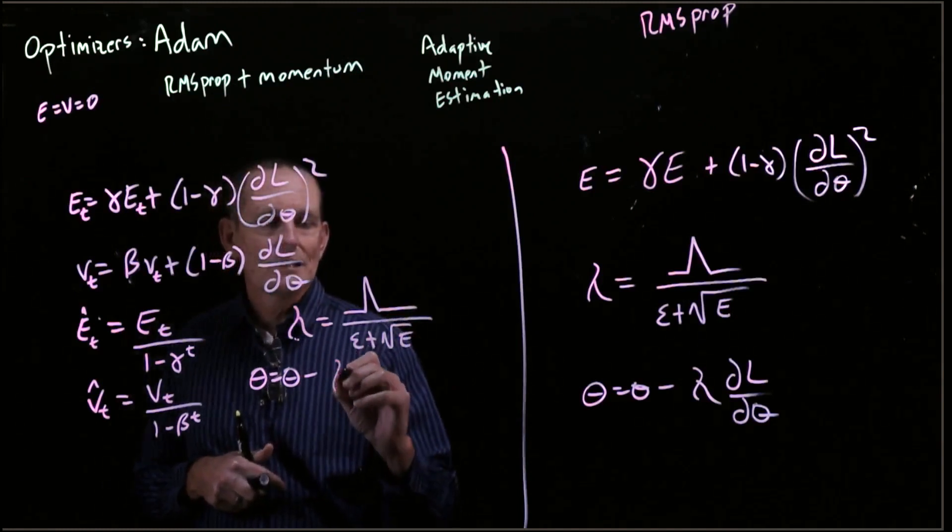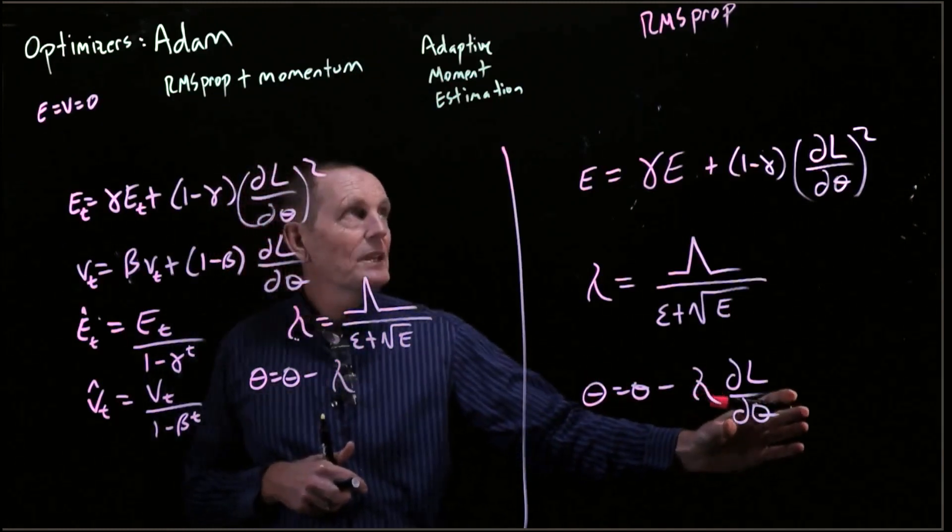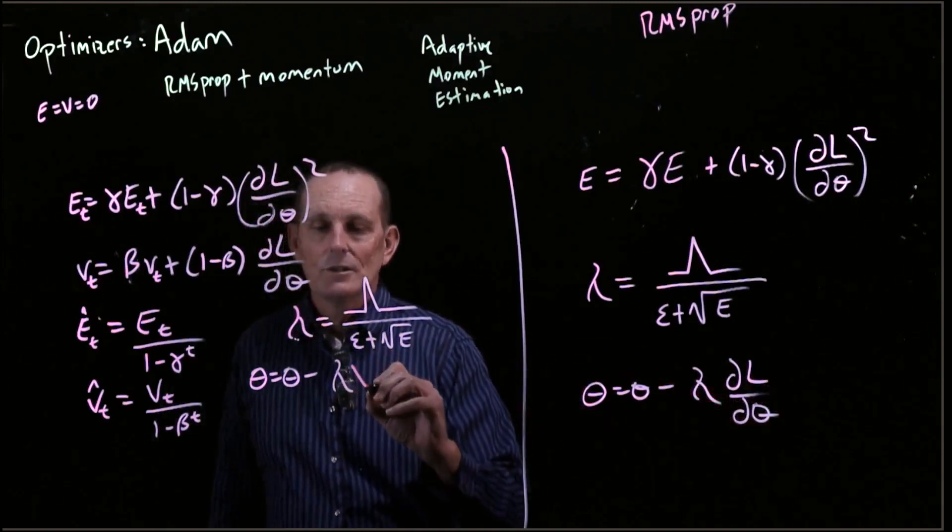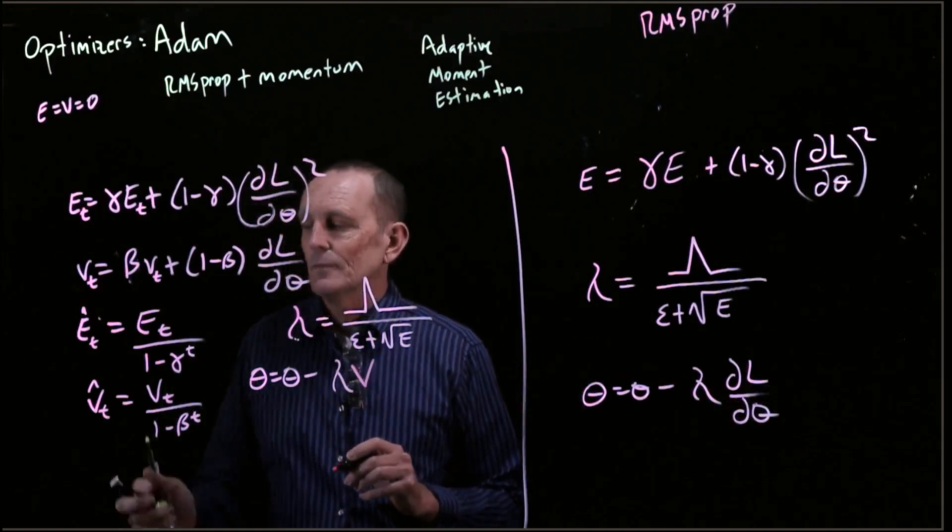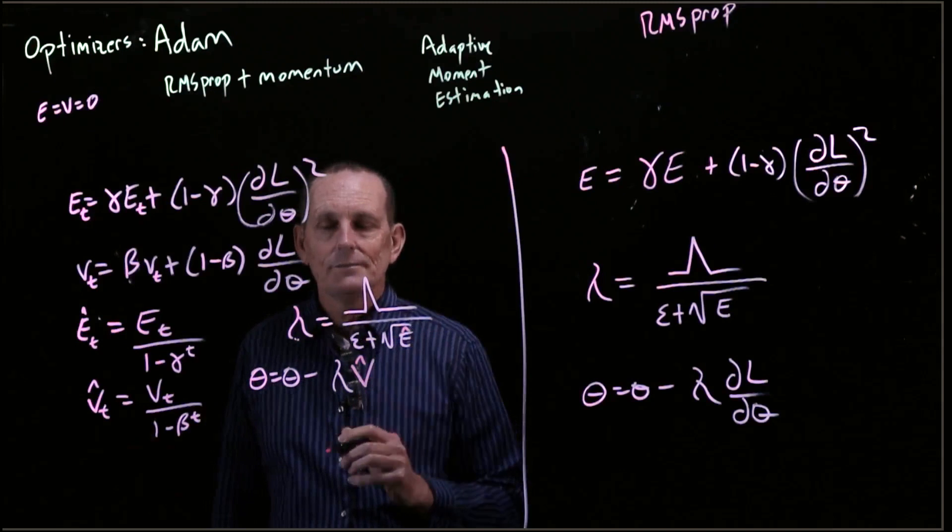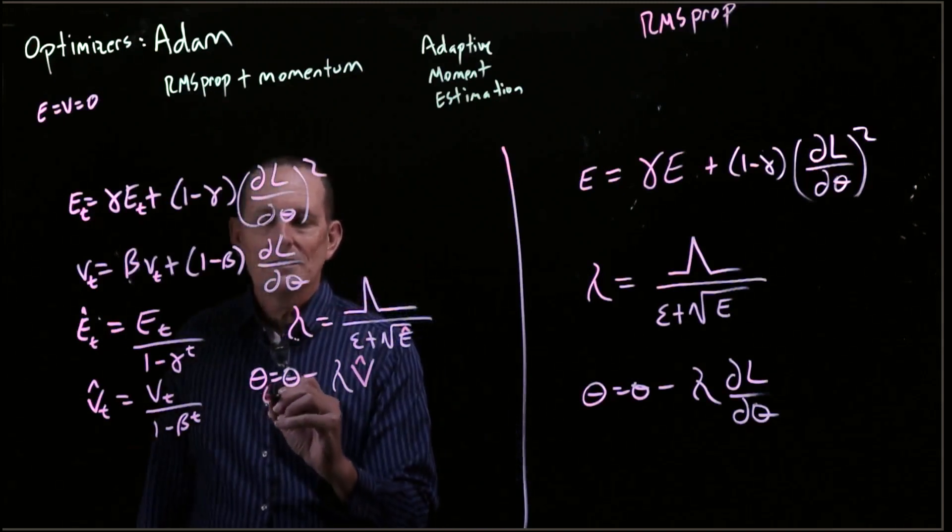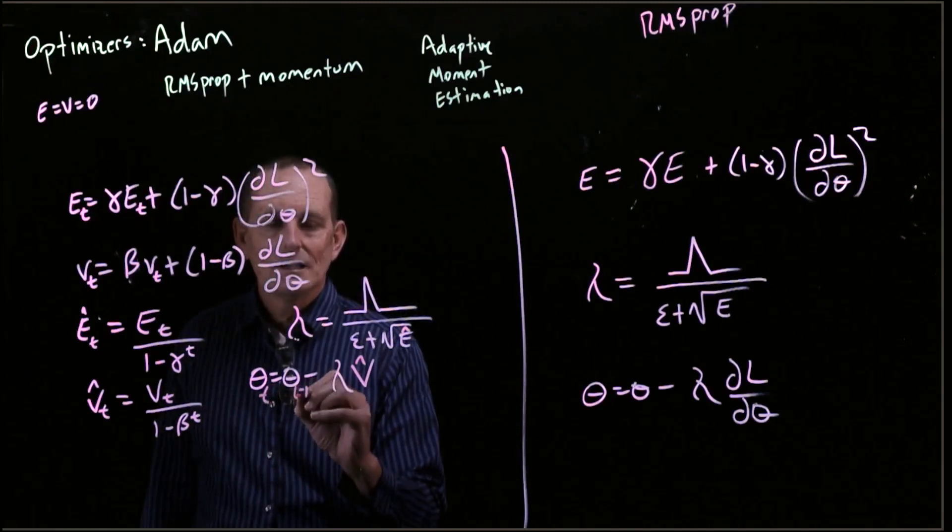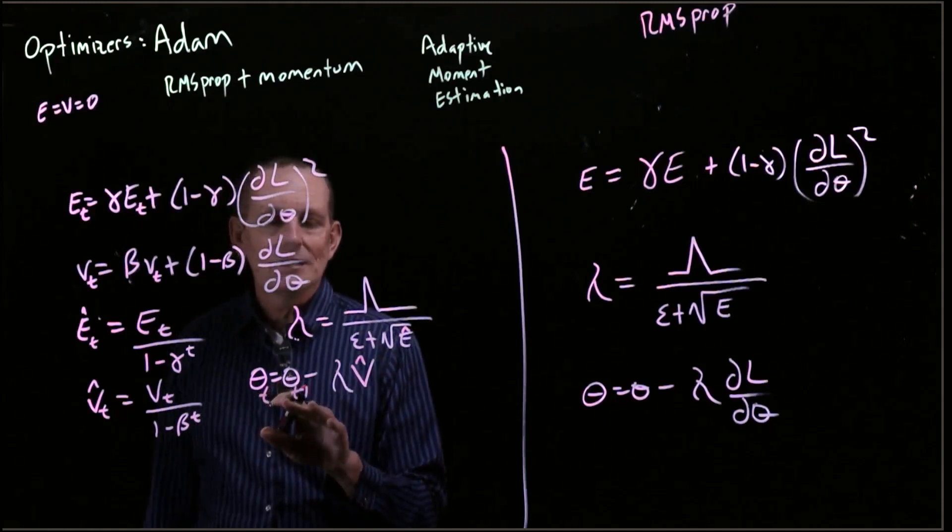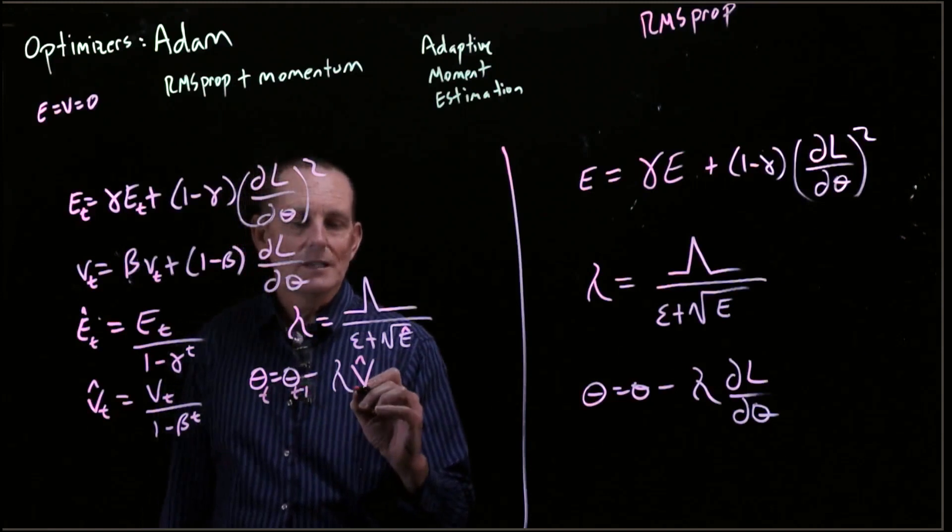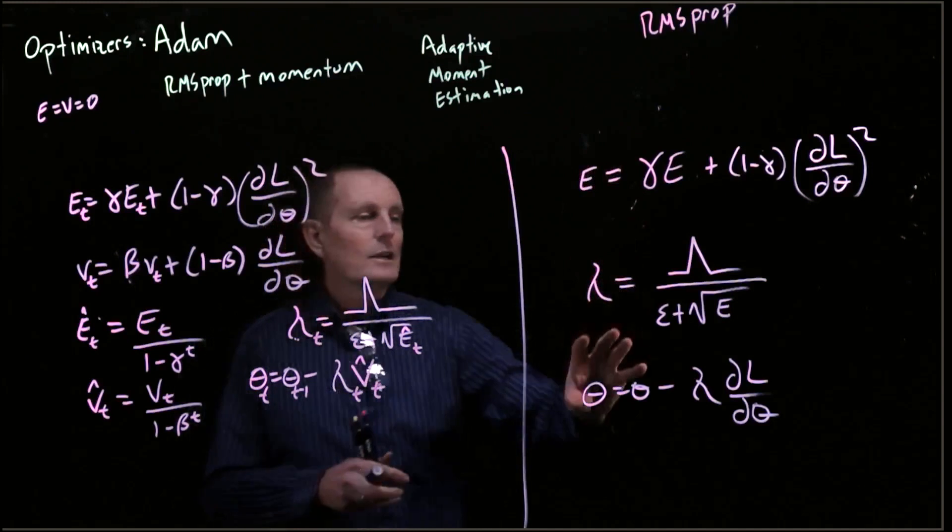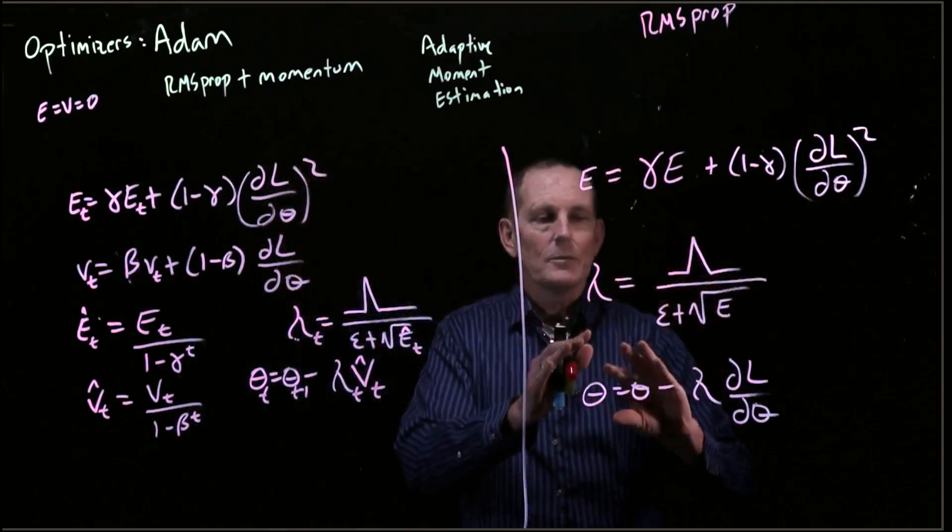And then theta equals theta minus lambda. But now, instead of RMS prop where we would use the gradient itself, now we're going to use the V hat. And here we'll use E hat. The theta at time step T equals theta at time step T minus 1 minus lambda at time step T and V hat at time step T. It's exactly combining RMS prop.